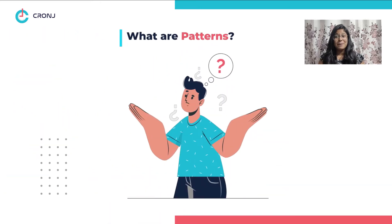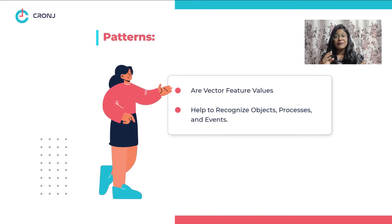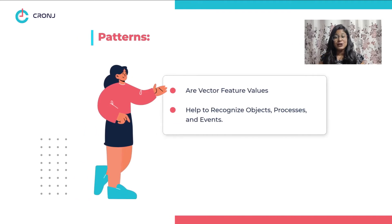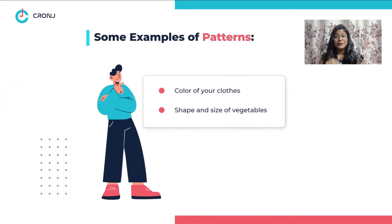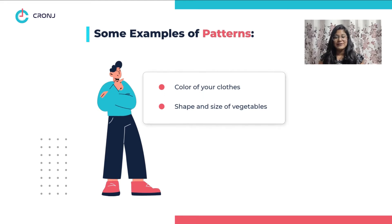So what are patterns? Patterns are vector feature values that can be applied in order to recognize objects, processes and events. For example, the color of your clothes, the shape and size of various vegetables and other attributes that allow you to categorize and identify a particular object, process or event.